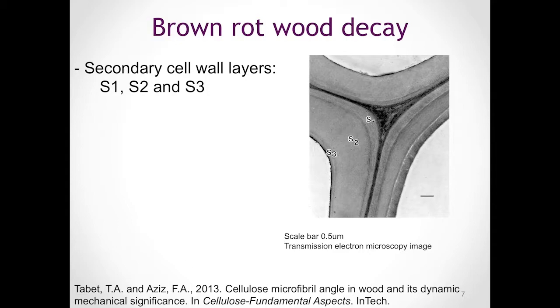We can subdivide the secondary plant cell wall into three distinct layers: the S1, the S2, and the S3 layer. I provided a transmission electron micrograph here.